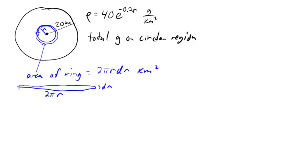Now we can find the mass of pollutant on this ring by taking the density and multiplying it by the area. So in this case, we've got 40e^(-0.2r) times our area function, so times 2πr dr.